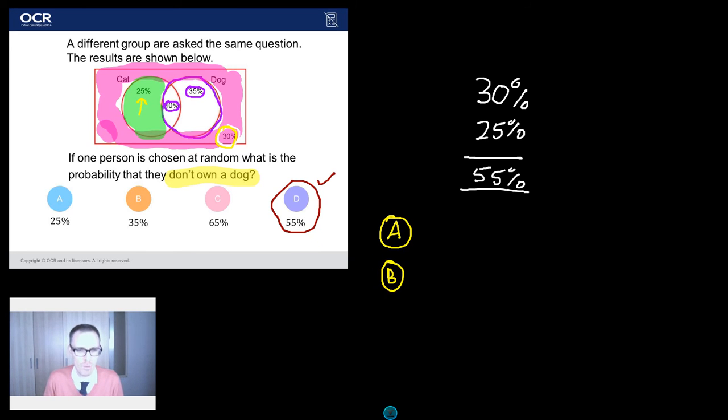B, 35%. Where on earth does 35% come from? Well, I reckon there's two possible reasons. One, they've just taken the 35% from dog owners. So they're actually answering who just owns a dog. So maybe they've misread the question. Or they're taking this 25% who just own cats and combining it with this 10% who also own a dog and putting them together like that.